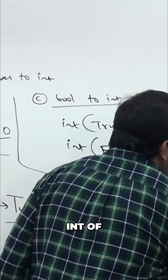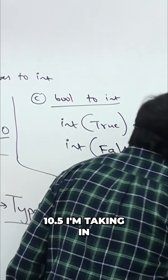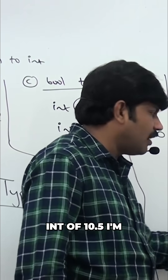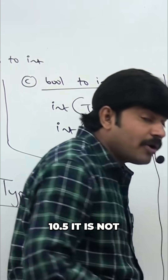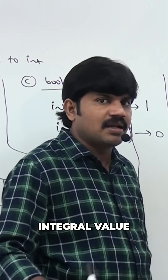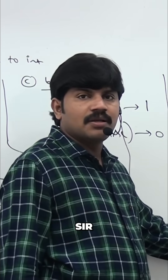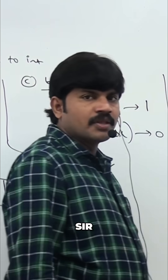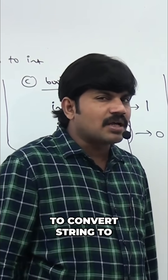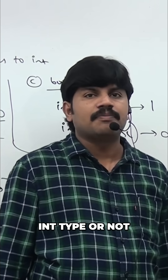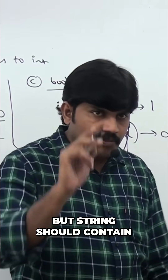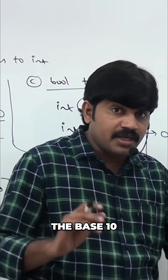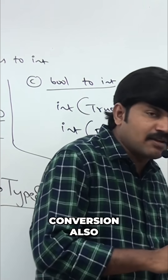Now int("10.5") — taking it in string form. 10.5 is not an integral value, it is a float value. So this conversion fails and we are going to get an error. To summarize: converting a string to int is possible, but the string should contain only an integral value and it should be in base 10.